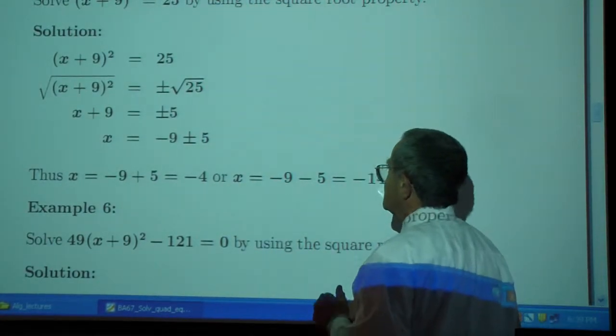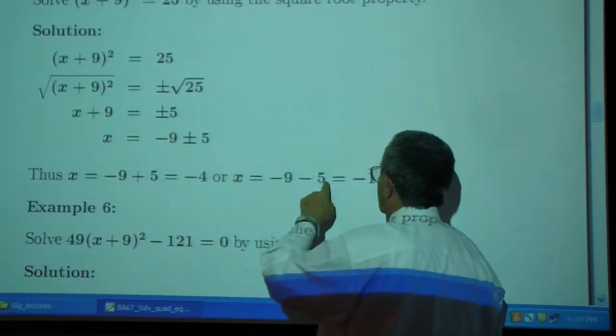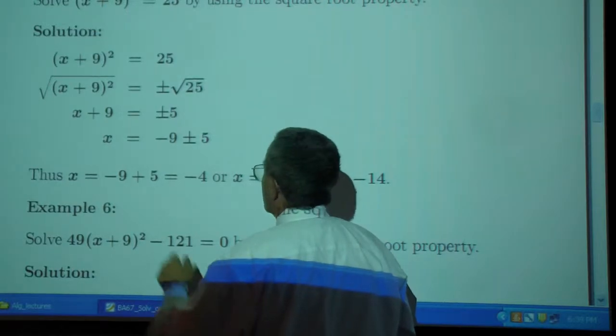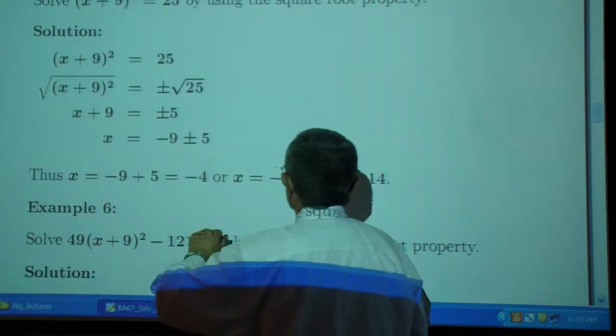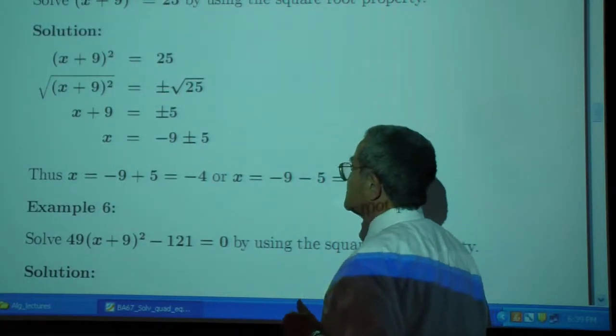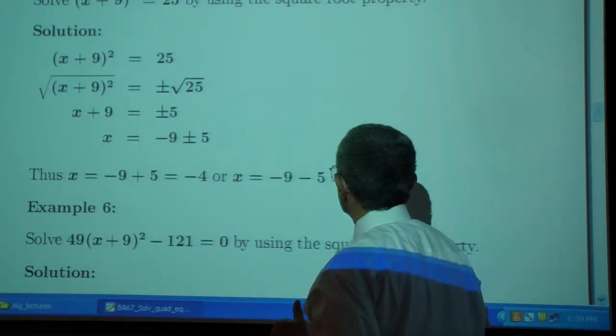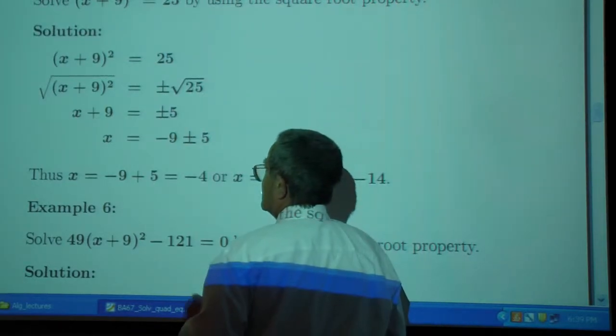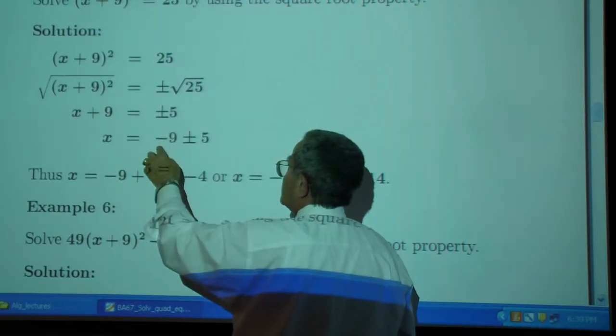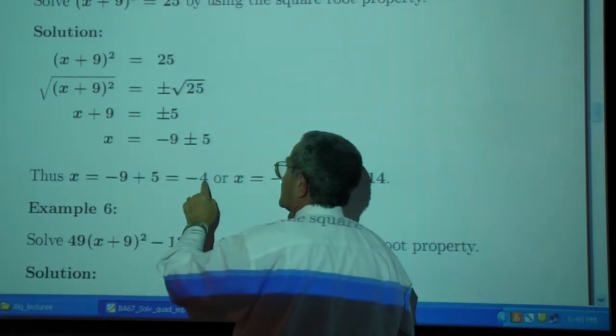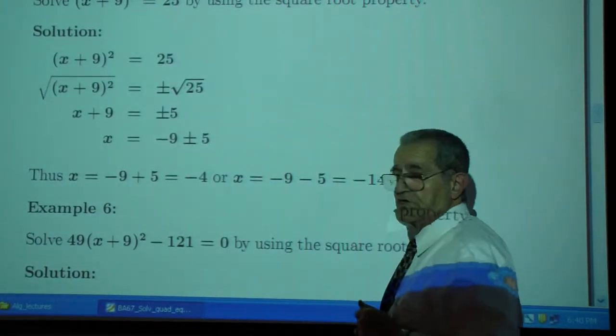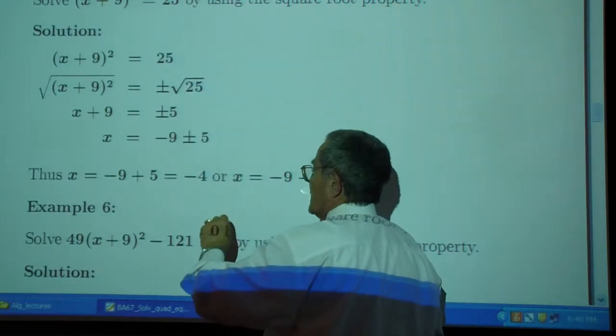If you want to, you can add 9. No, you don't add 9. This is the rule. You have negative 9 plus 5, which is negative 4. Or you get negative 9 minus 5, which is negative 14.